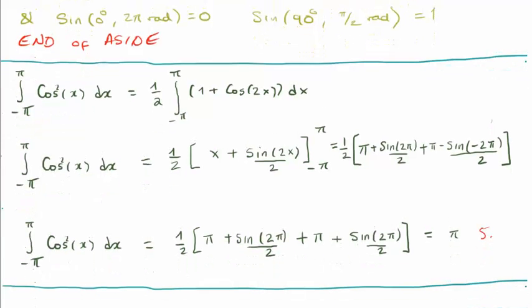Putting all of those together we see that the integral of cos squared x along the interval minus pi to pi is simply pi.